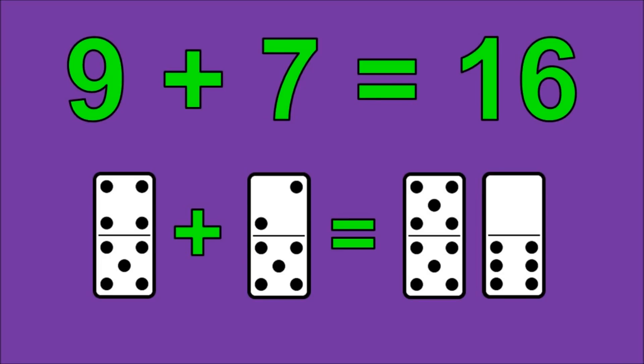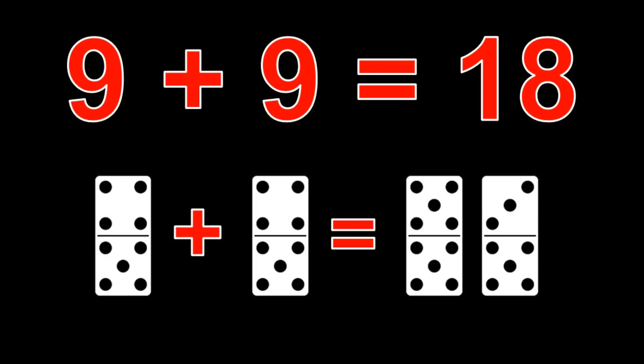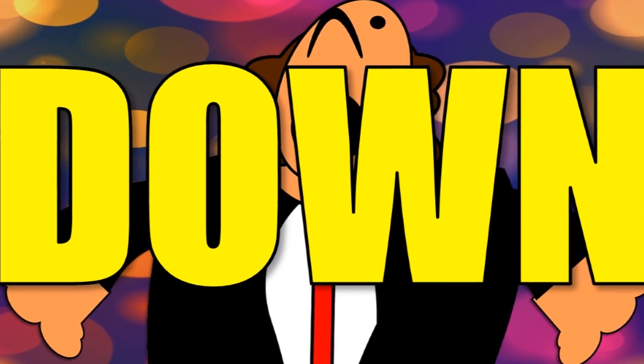9 plus 7 is 16. 9 plus 8 is 17. 9 plus 9 is 18. 9 plus 10 is 19. Now let's go back down.